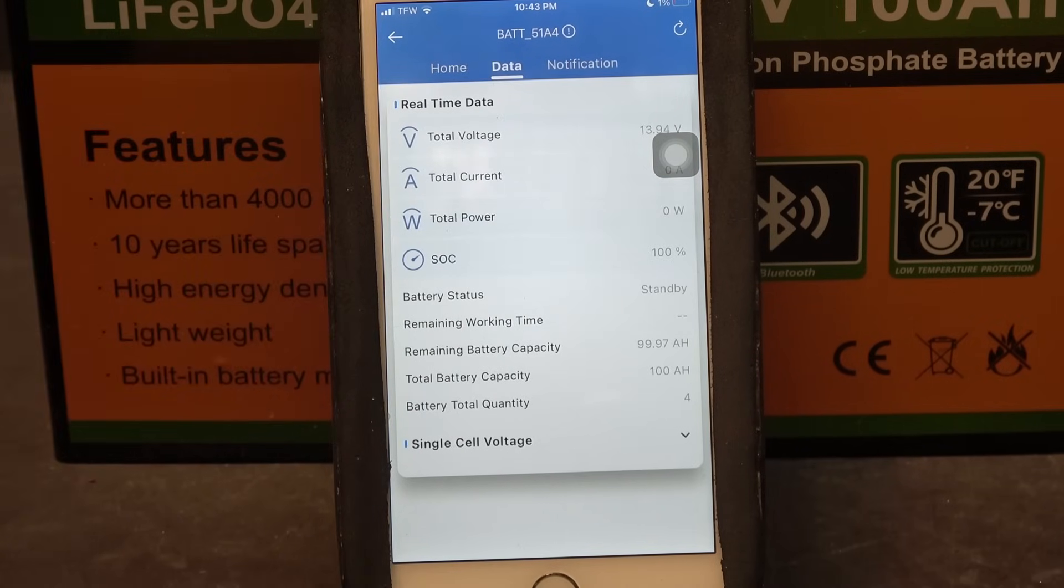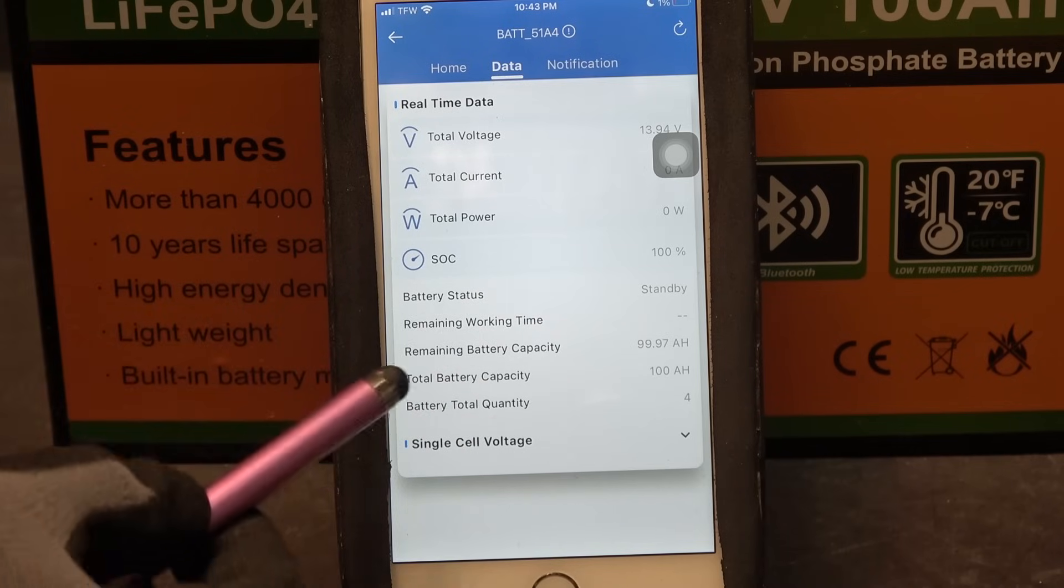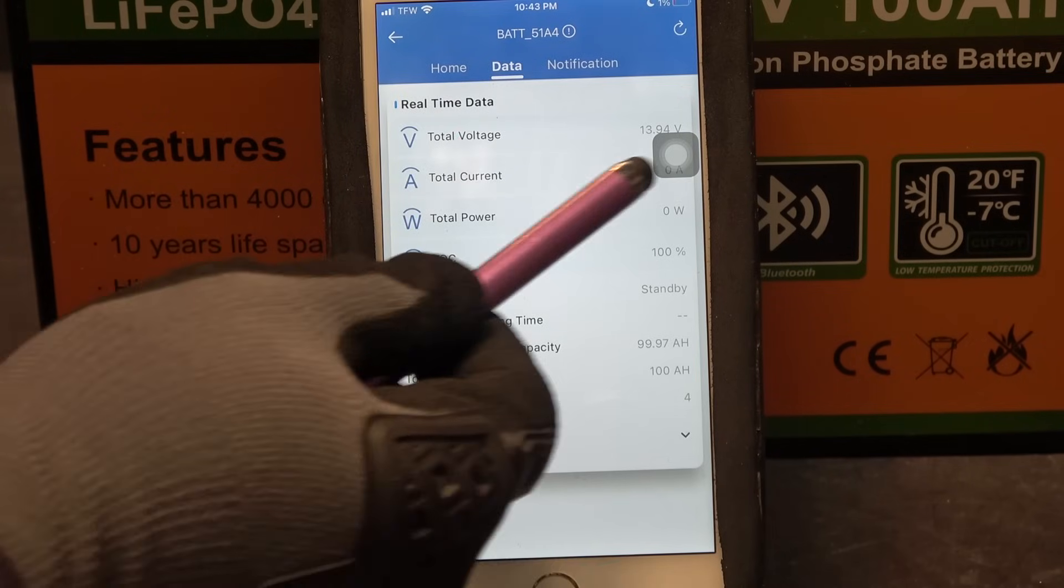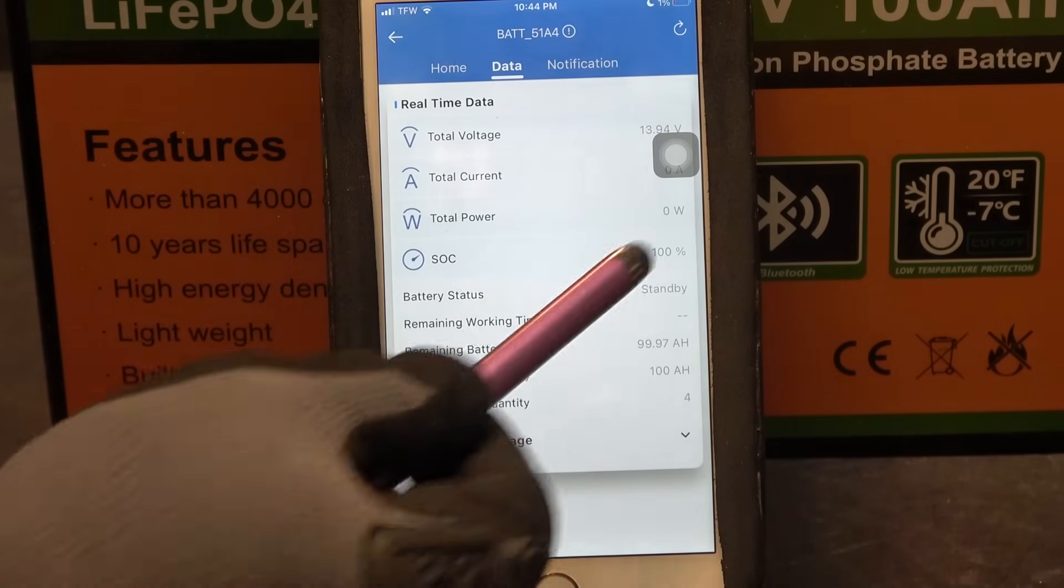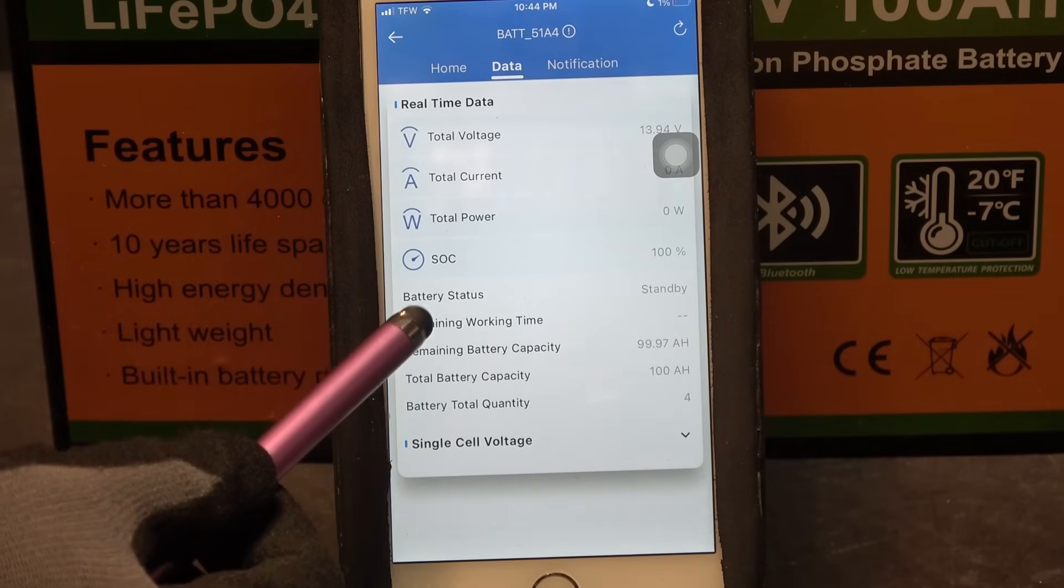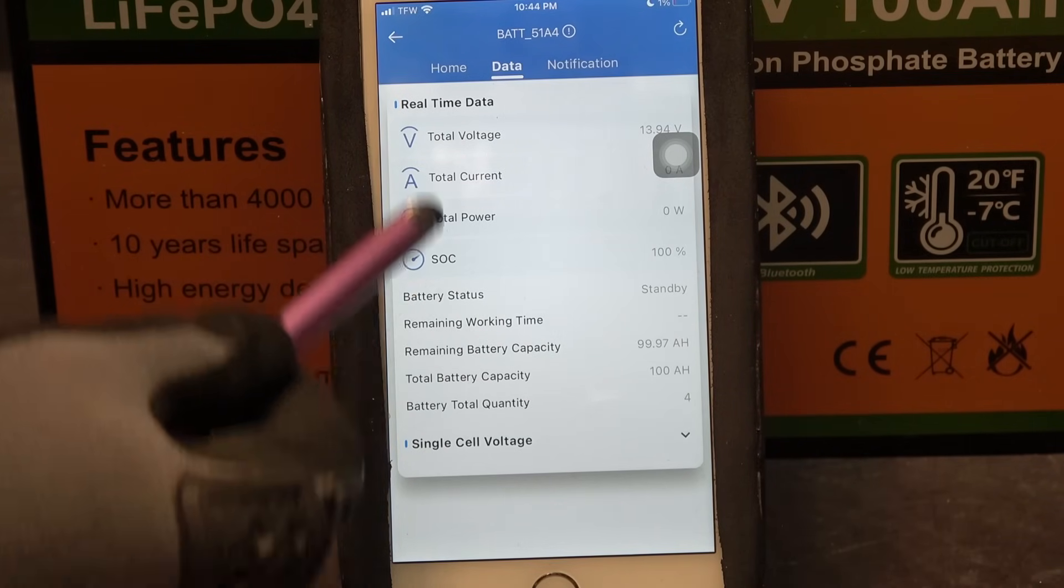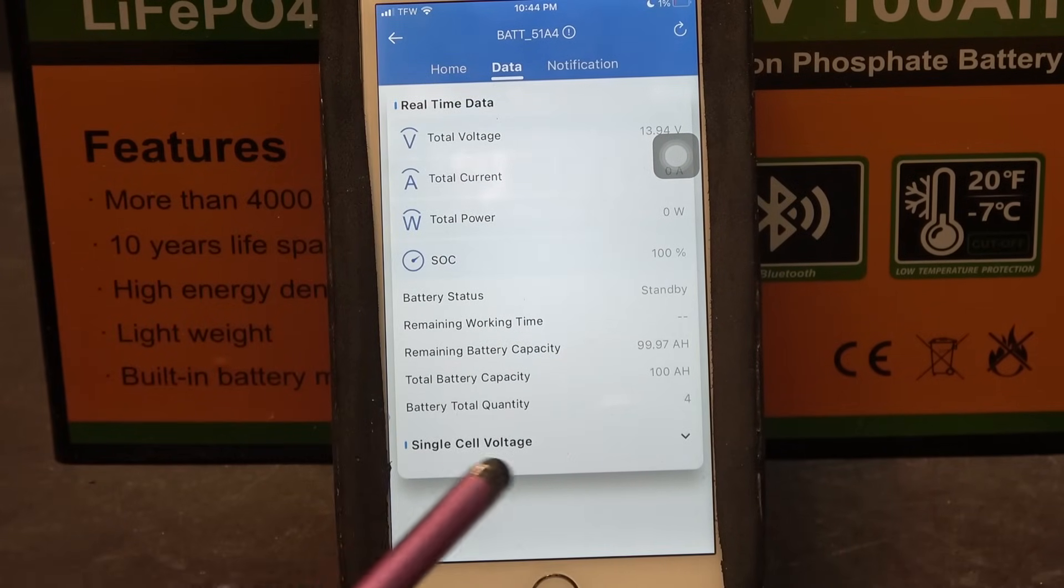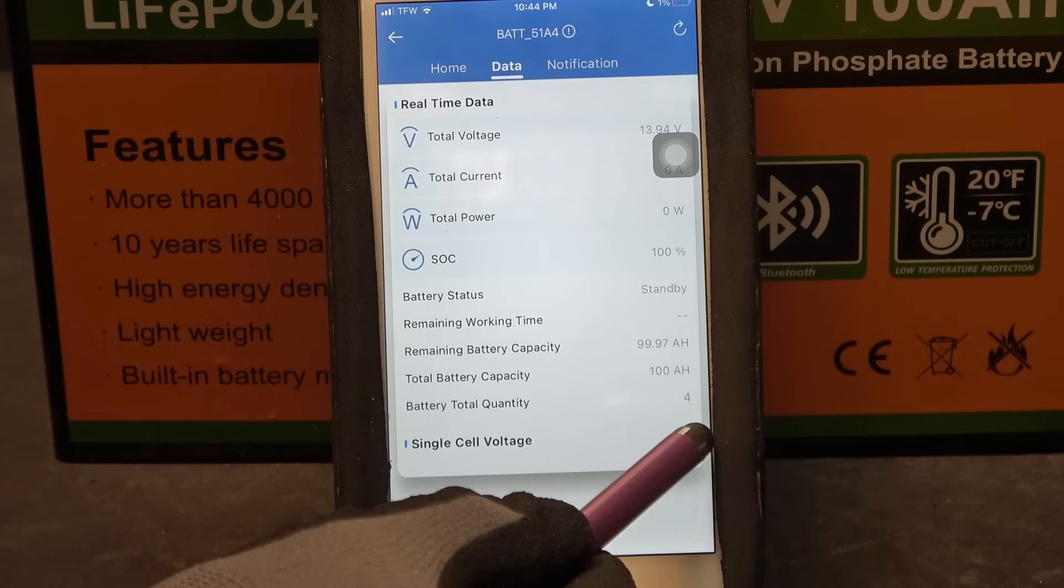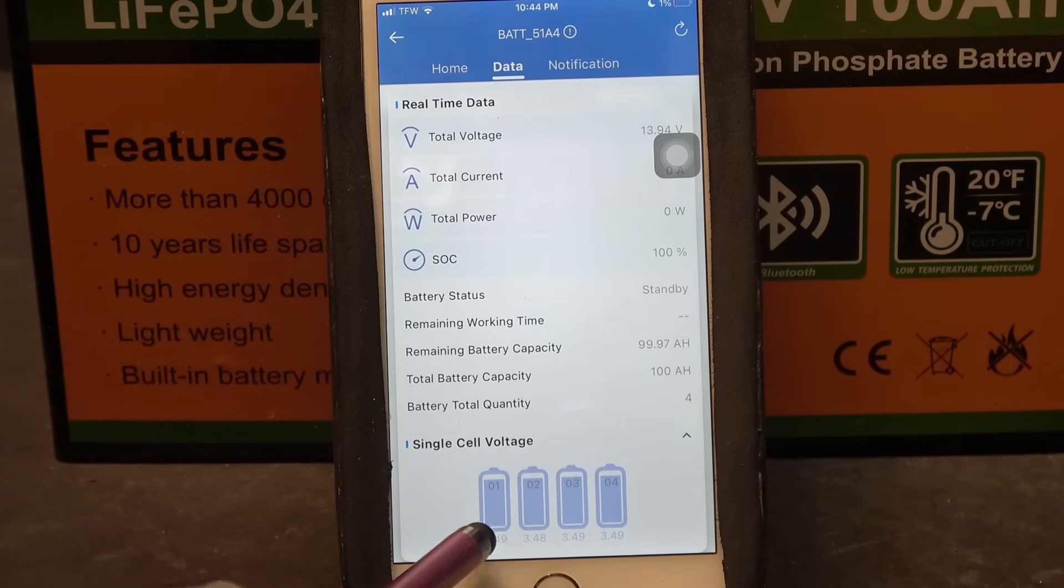Let's go to data and over here it will show you the total voltage of the battery, total current, total power being used, state of charge, 100% battery status. Basically a lot of repeated data from the previous page. The thing that's different here is the single cell voltage. So you click down here. It will show you the voltage of each individual cell. So there are four cells inside this battery and these are the voltages of each individual cells.